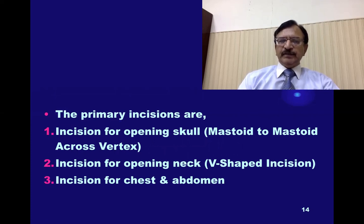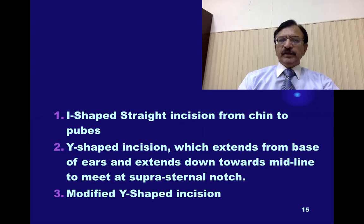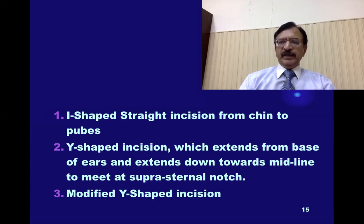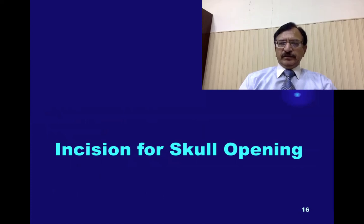The incision for the chest and abdomen can be: an I-shaped straight incision in the midline from chin to pubis, avoiding the umbilicus; a V-shape incision extending from the base of the ears downward toward the midline to meet at the suprasternal notch, then following down to the pubis in midline; or a modified Y-shape incision, starting from the shoulder tips and going above or below the nipple. When we discuss the opening of the cavities, we will discuss these in detail.